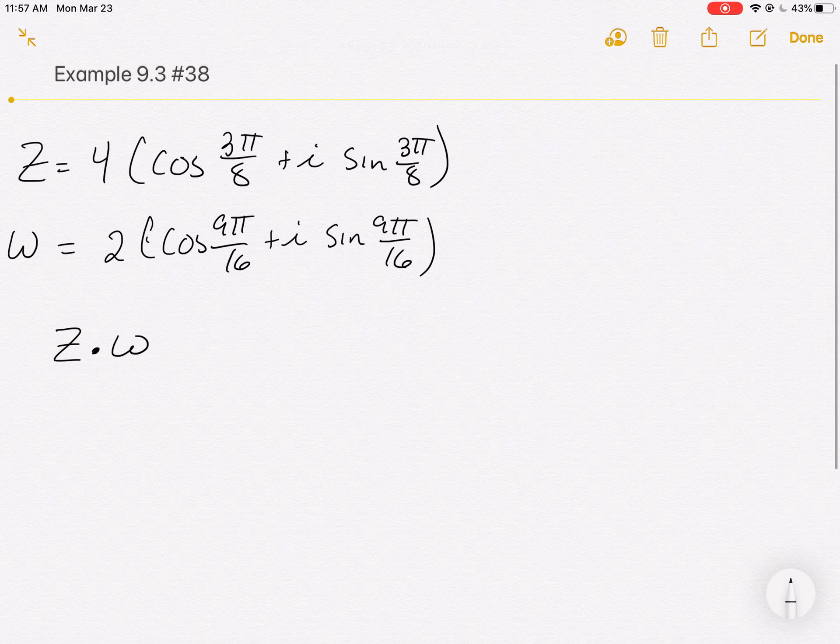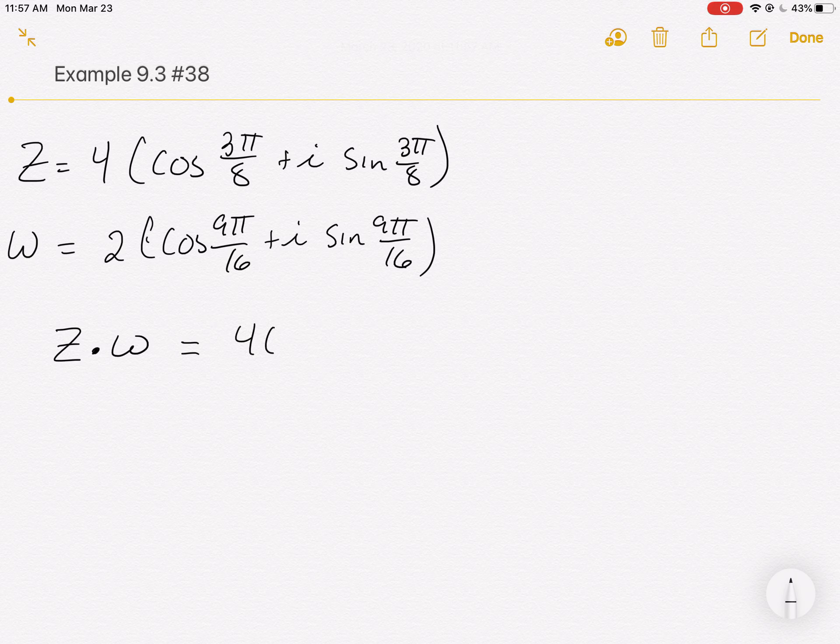So all we have to do here is say our new number out in front is going to be 4 times 2. That's our new r. So we're going to have an 8 sitting out in front. And now we need to get a new angle. And if you're OK, I'm going to use the CIS notation.